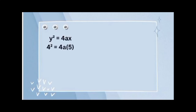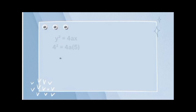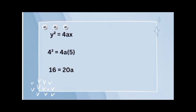Then we substitute the values. We divide 8 by 2, so it's going to be 4 — this is our y. So y squared equals 4 squared, which is 16, and our x in 4ax is 5. So 4 squared is equal to 16 and 4a times 5 is 20a.